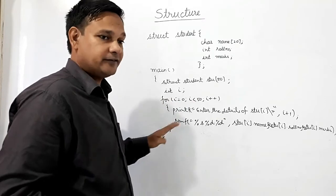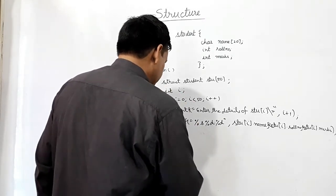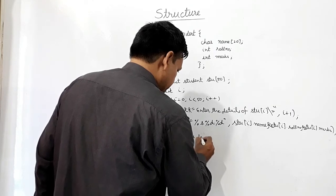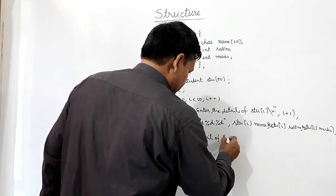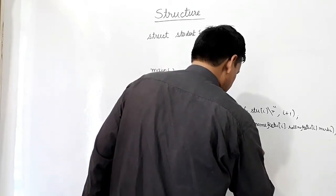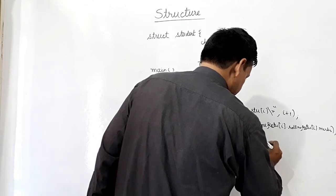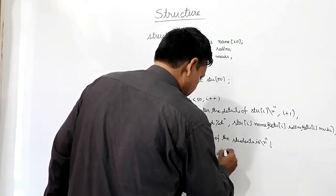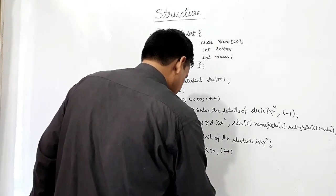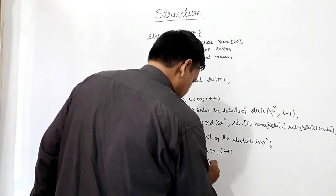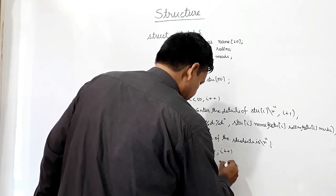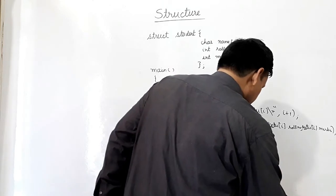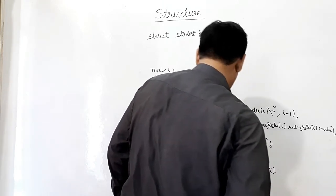If detail of 50 students have been completed input, now I want to display it. Printf, the detail of the student is. For i equal to 0, i less than 50. Printf %s %d %d. %s is used for stu[i] dot name.